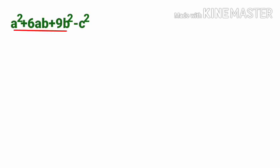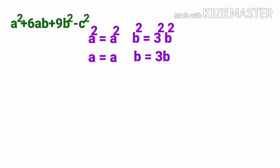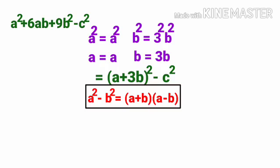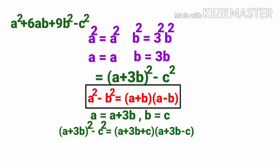Subdivision 5: a squared plus 6ab plus 9b squared minus c squared. First, a squared plus 6ab plus 9b squared fits the a plus b whole squared formula, where A equals a and B equals 3b. So this becomes a plus 3b whole squared minus c squared. Now applying a squared minus b squared equals a plus b into a minus b, with A equals a plus 3b and B equals c, the answer is a plus 3b plus c into a plus 3b minus c.